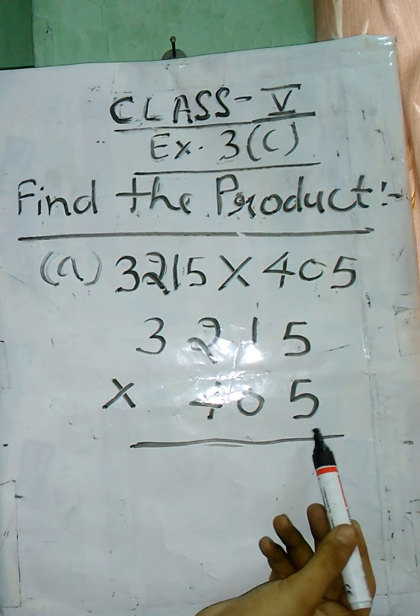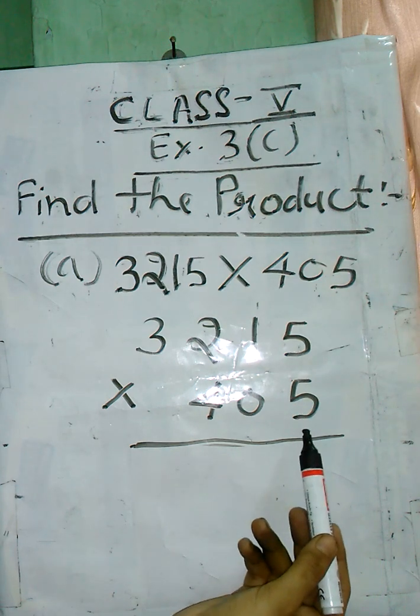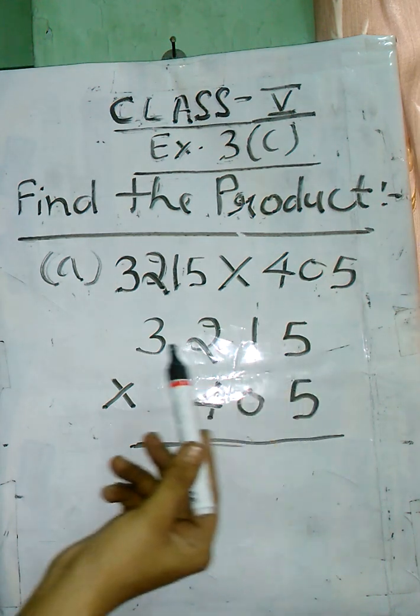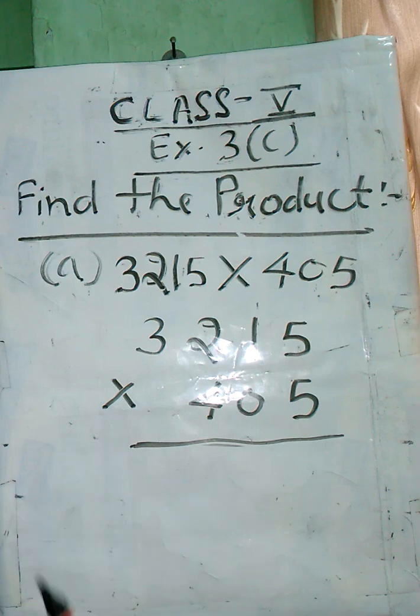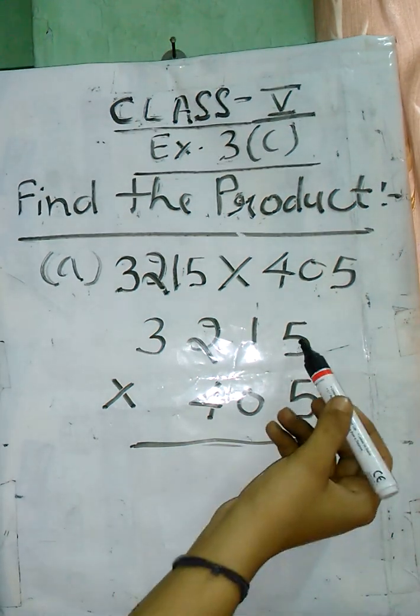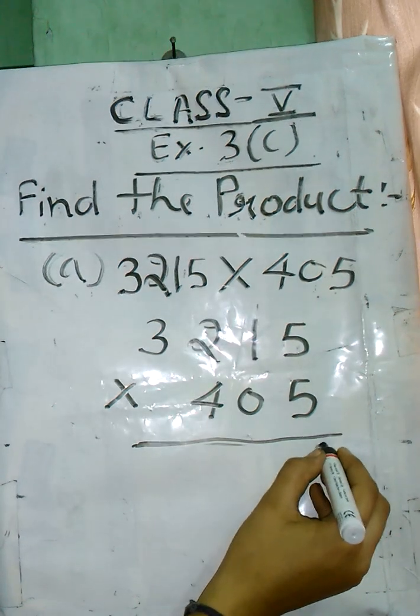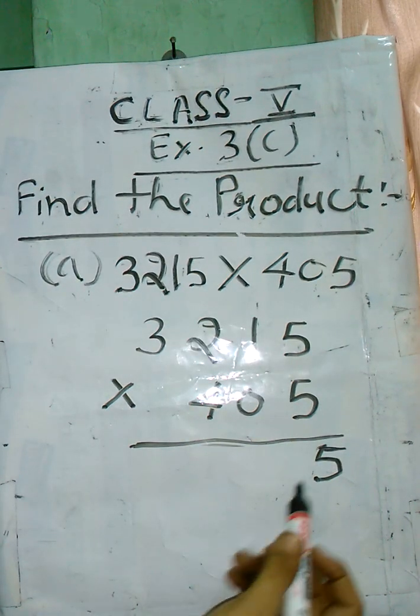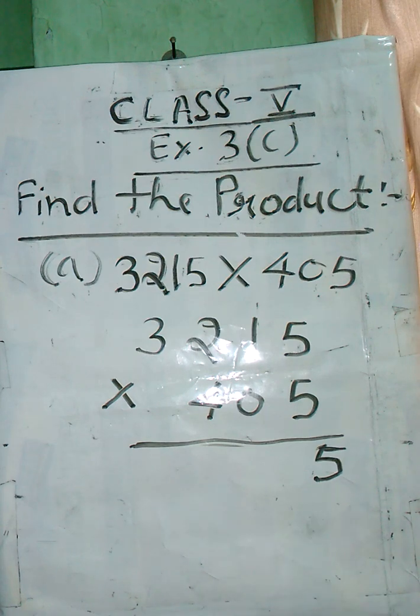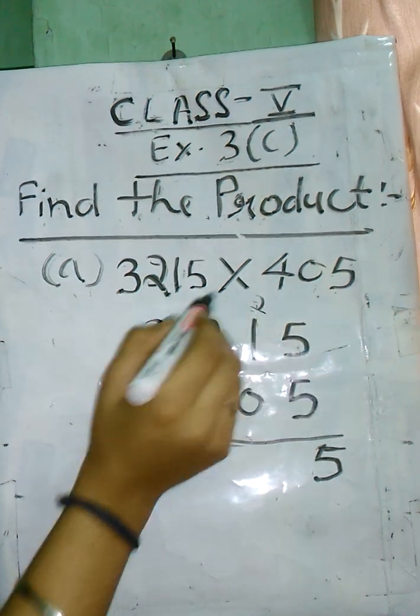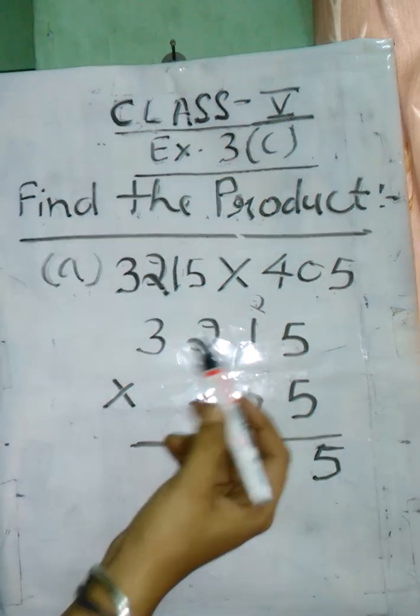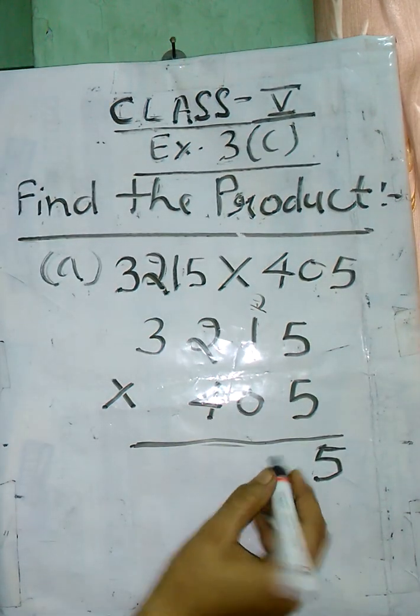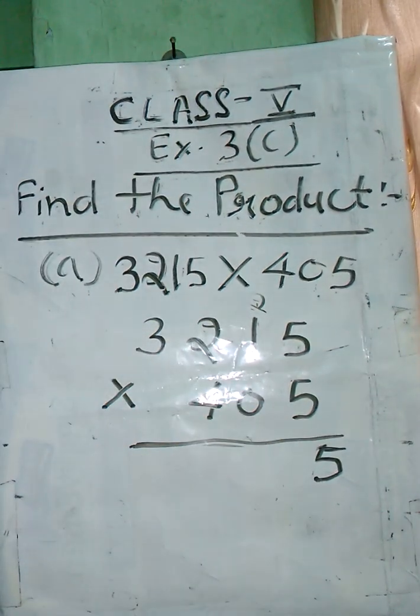405, we will multiply all the digits step by step. 5 into 5 is 25, write the ones place of 25, then 2 carry over on tens. 5 into 1 is 5 plus 2 carry over, so 7.